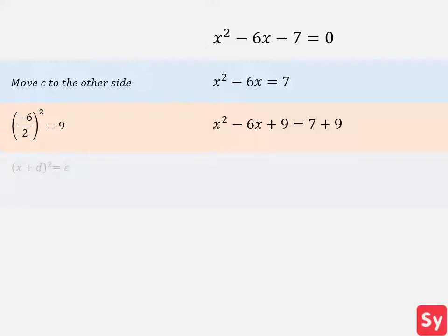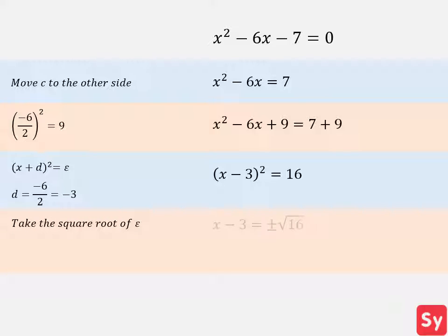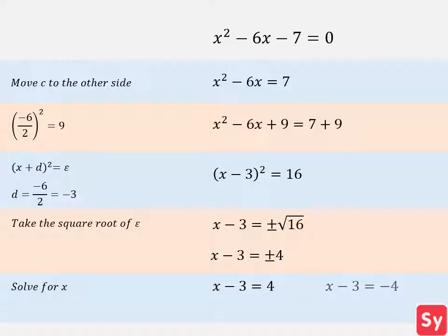Next, we rewrite the left side in square form. We know d is negative 6 over 2, which is negative 3, so we plug in this value into the equation. Next, we take the square root of each side. This simplifies to x minus 3 equals plus or minus 4. Now we solve for x: x minus 3 equals 4, and x minus 3 equals negative 4. So x equals 7, and x equals negative 1 — these are our answers.